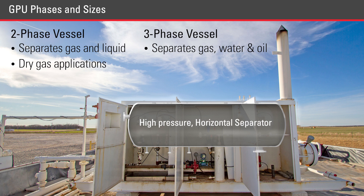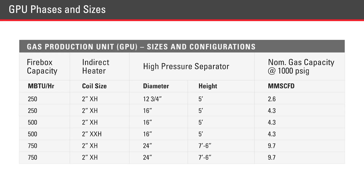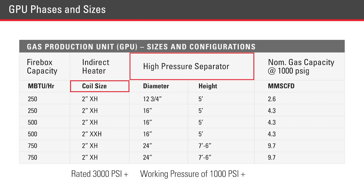The size of the GPU needed will depend on the expected flow rate. This chart shows the common sizes and the gas flow rates that it can handle. This will be useful when sizing Kimray products to be used on this equipment. The coil will be rated to 3,000 psi or greater, and the separator will have a working pressure of 1,000 psi or more.